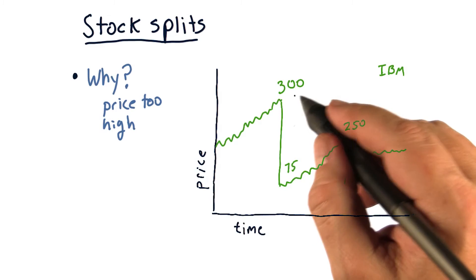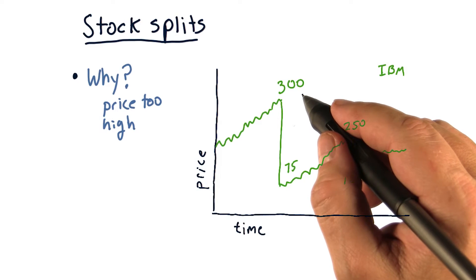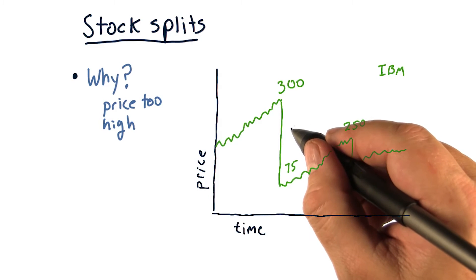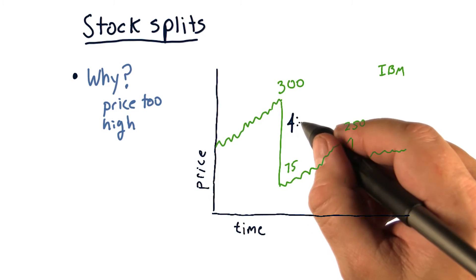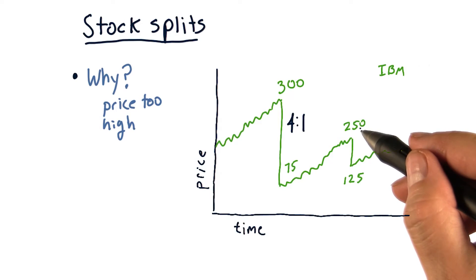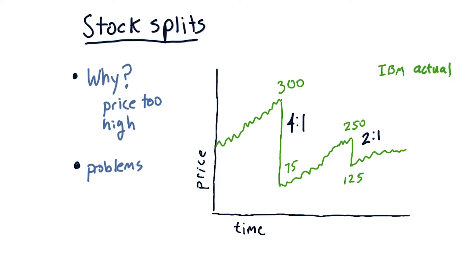look, let's take that one share that's priced at $300 and break it into four shares at 75. So that's called a four for one split. In this case, we had a two for one split. Okay, so that's why splits happen.